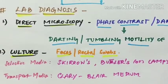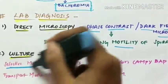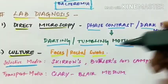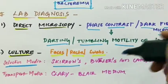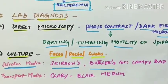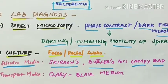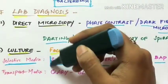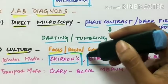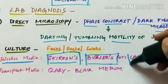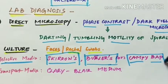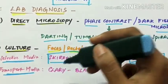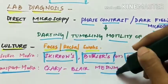Culture is performed using feces or rectal swabs. The selective media used for culture of Campylobacter is Skirrow's media or CAMPY BAP media. The transport media used is Cary-Blair medium.